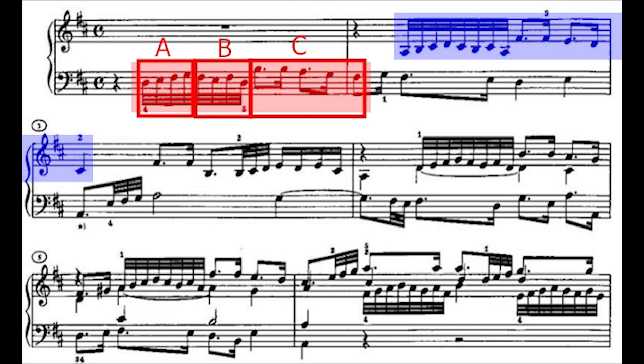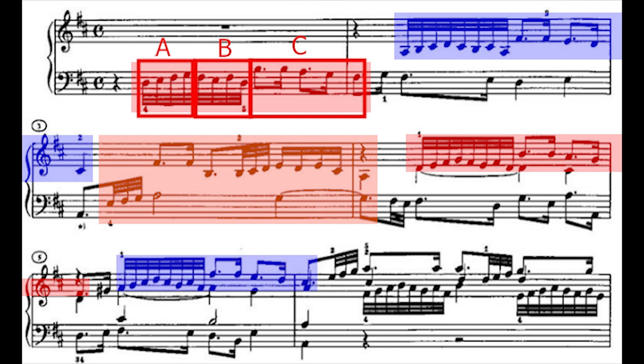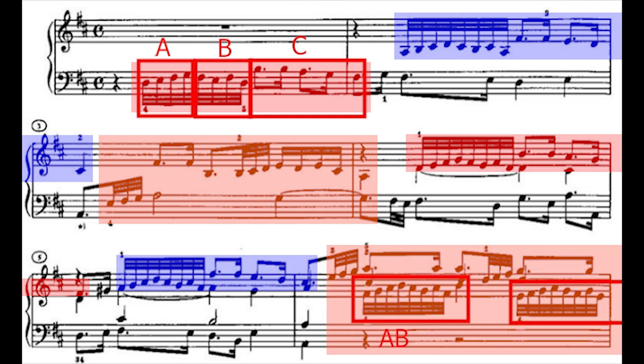At measure three, there is a codetta of one bar preceding the entry of the subject in alto, and is followed by the answer at measure five. The exposition ends on the first beat of bar six, after which comes another codetta containing allusions to the demi-semiquaver figure of the subject.